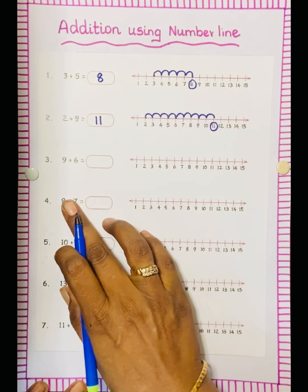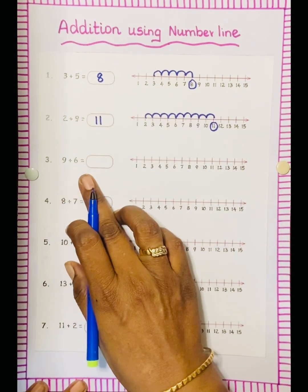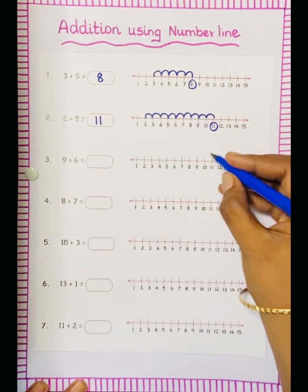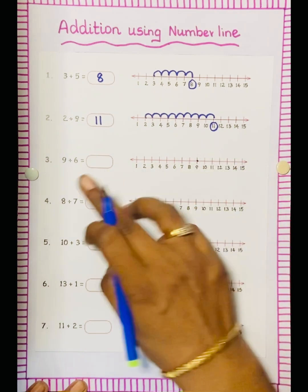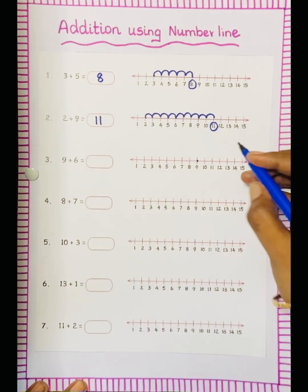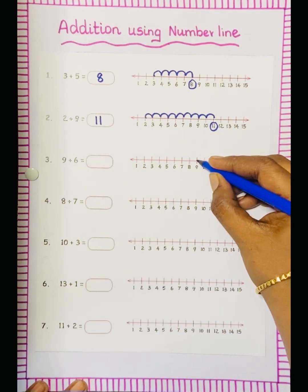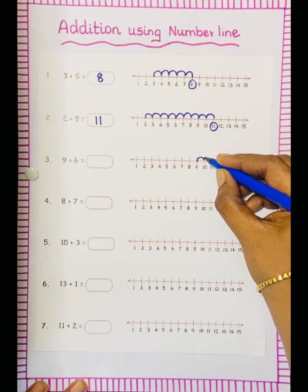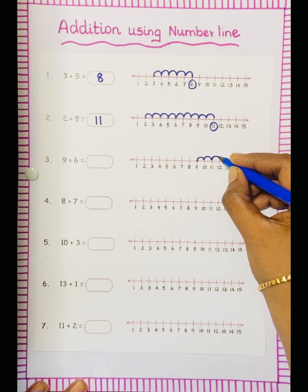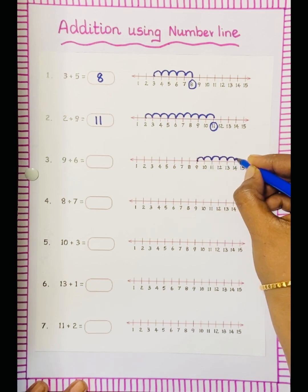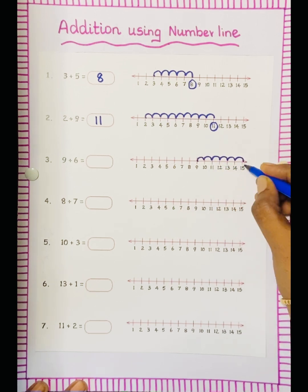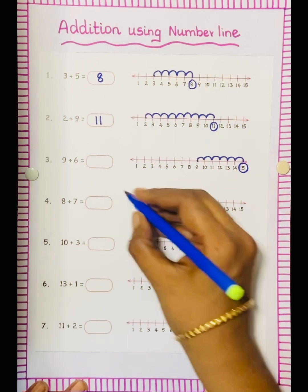Next one: 9 plus 6. So how many jumps? Keep the dot at 9, then make 6 jumps: 1, 2, 3, 4, 5, 6. So the answer is 15.